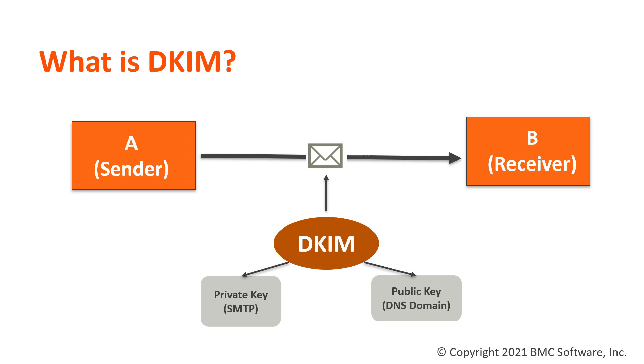If the private and the public key match, DKIM will allow the email to be sent to B. This ensures that B will get the original email.